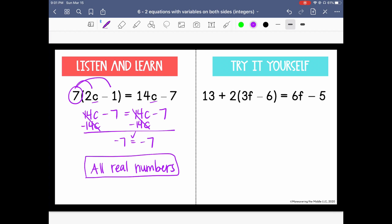Now let's look at the one on the right. We need to start here by distributing the positive 2 to each of these terms. So we have 13 plus 6f minus 12 equals 6f minus 5.